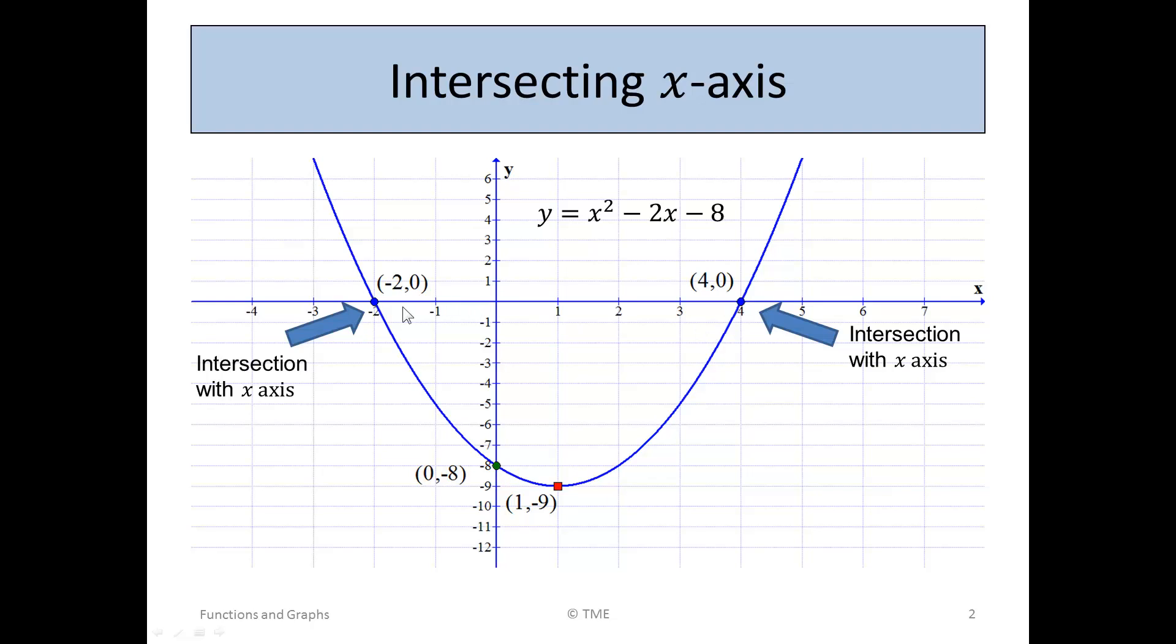Well, if it was drawn visually, we could see it's roughly at minus 2, 0, and at the point 4, 0. But if we hadn't drawn the graph, could we find those points algebraically?